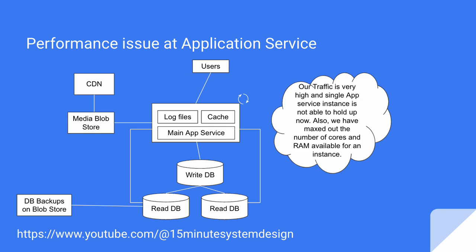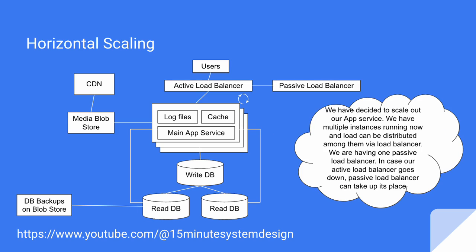We kept adding more users and suddenly realized our traffic is very high and a single app service instance is no longer able to hold up. We have also maxed out the number of cores and RAM available for an instance. To handle the situation, we decide to scale out our app service. We now have multiple instances running, with load distributed among them by a load balancer. We also keep one passive load balancer so that if the active one goes down, the passive load balancer can take over.